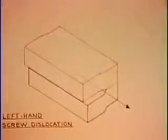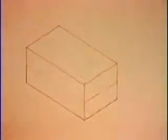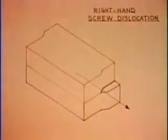The screw dislocation may have either a left hand or a right hand twist. The Burgers Vector of one is the negative of the other.